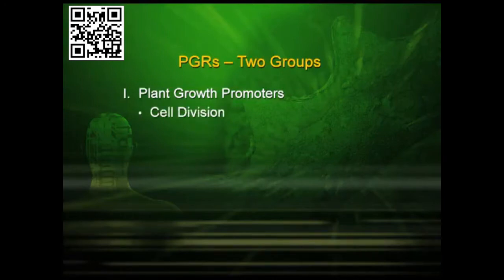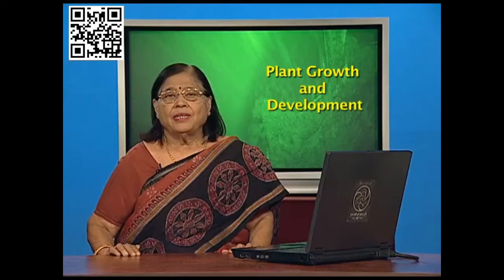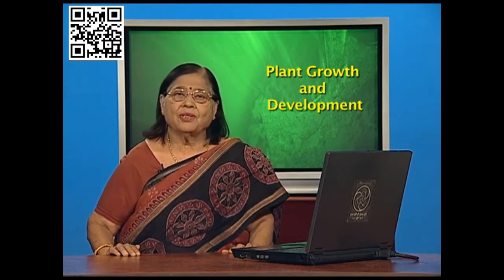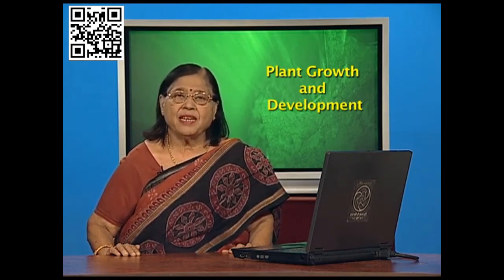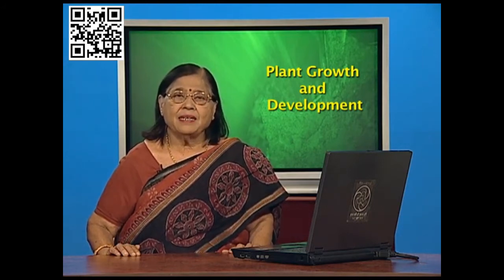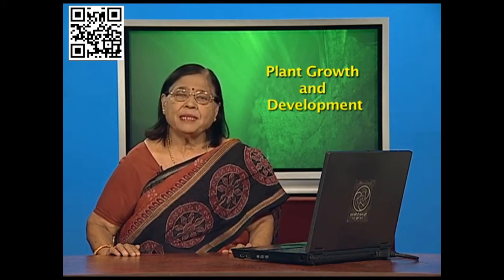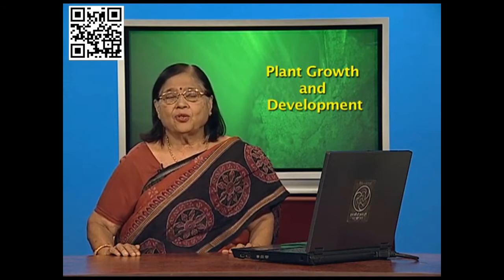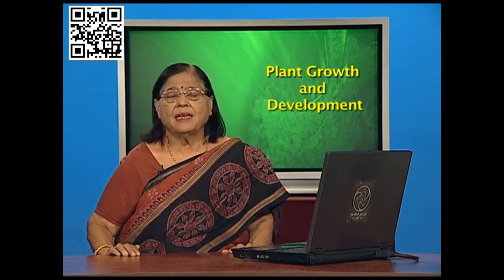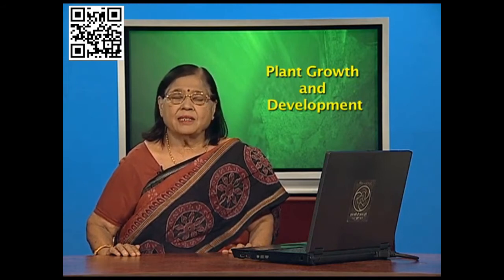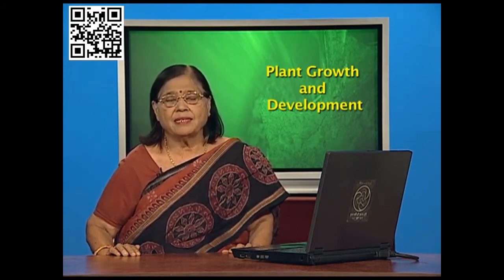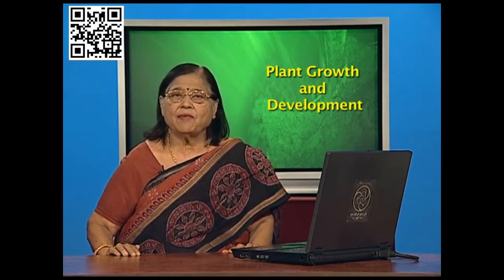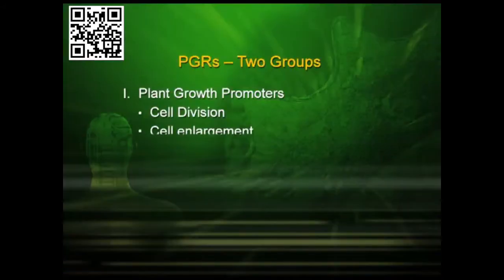Plant growth promoters help in cell division — you know that cell division comes into picture when one cell divides into two, so that is growth and promotion. They also help in cell enlargement, that is increase in the size of the cell. First one cell becomes two cells, both cells enlarge; two cells become four cells, all four cells enlarge. With the result, there is growth.